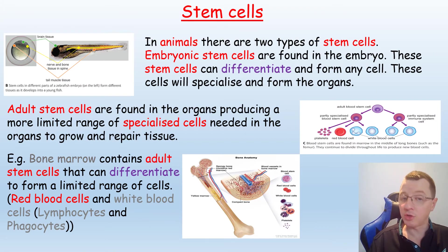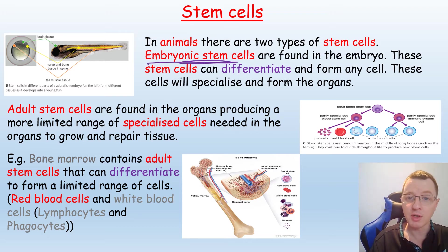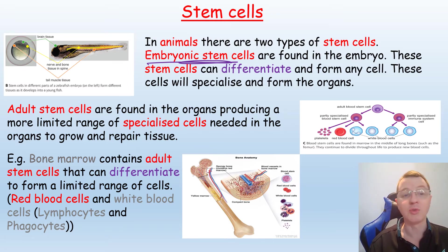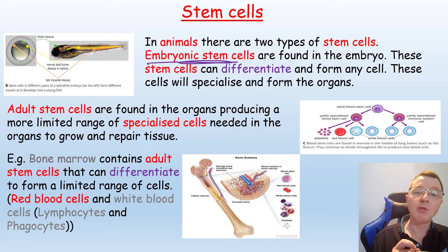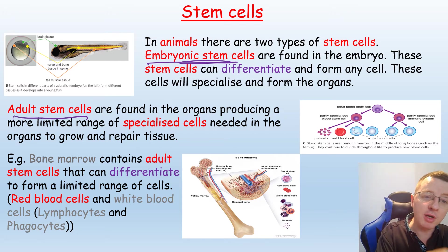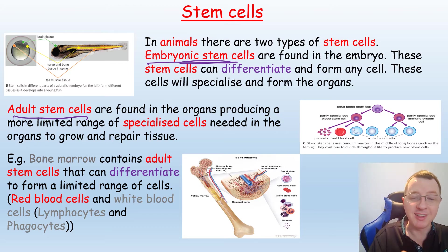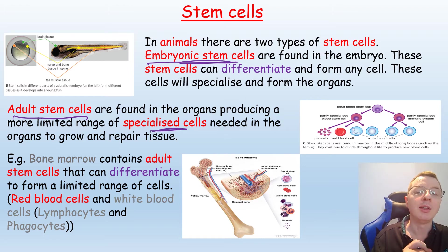In animals, there are two types of stem cells to consider. There are the embryonic stem cells we've just discussed, which can differentiate and form any one of the 216 different specialised cells. These specialised cells then form the tissues and organs. However, there is also a different type known as an adult stem cell, which is found in fully grown organisms — in the organs of these animals.